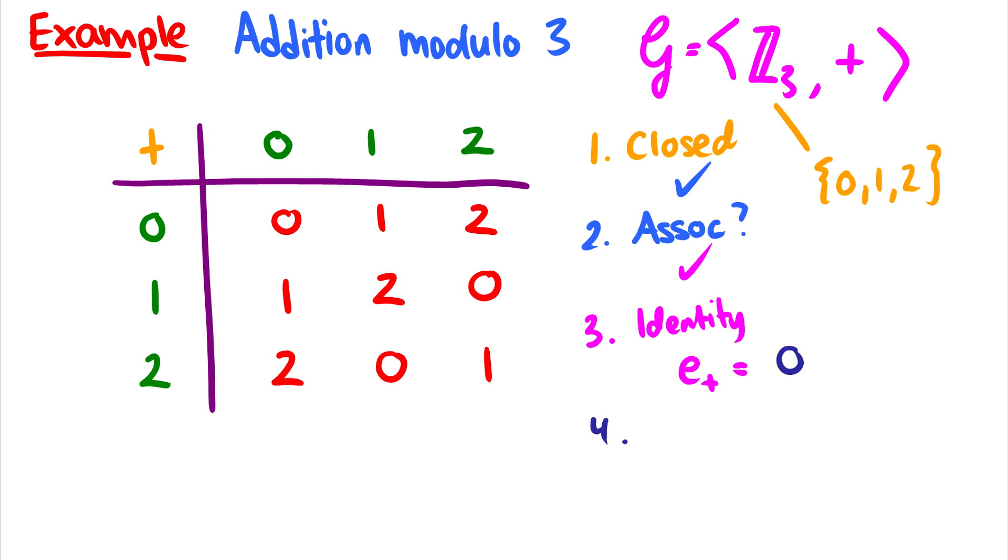And finally, 4. Is there an inverse for every element? Which means if we take 0+0⁻¹, we better get 0 back. If we take 1+1⁻¹, we better get 0. And if we take 2+2⁻¹, we better get 0.